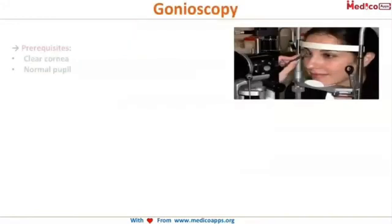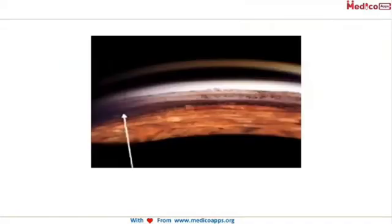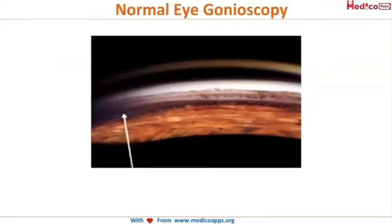The prerequisites of gonioscopy are a clear cornea and a normal pupillary size. Both of these can be asked as a question in exams.